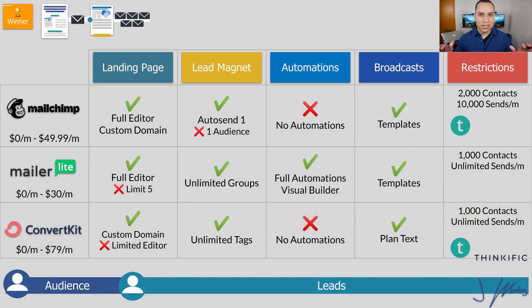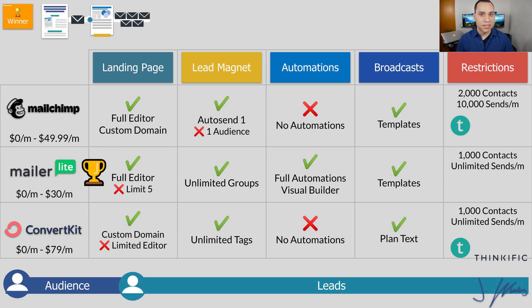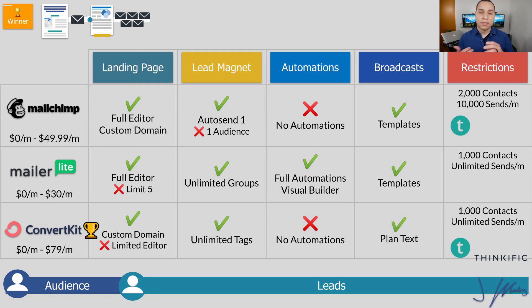So that does it for the features, usability, and restrictions with the free accounts. Now let's crown the winner. If you're looking at just free features — building a landing page, delivering your lead magnets, having automations, and setting up tags, groups, audiences, and triggers — then MailerLite is the winner, as long as you have an online presence and your account gets approved. When it comes to affiliate marketing or course creation being a large part of your business, ConvertKit is the winner — they're more open to affiliate links and are the only one that directly integrates with Teachable and Thinkific.